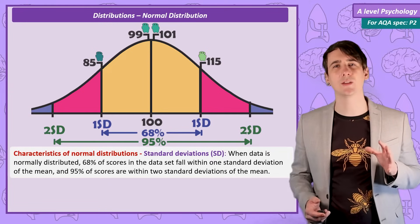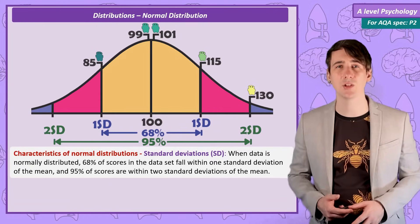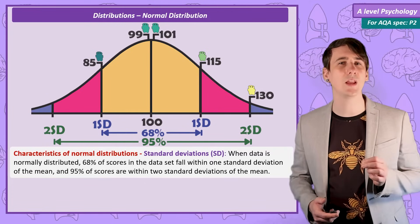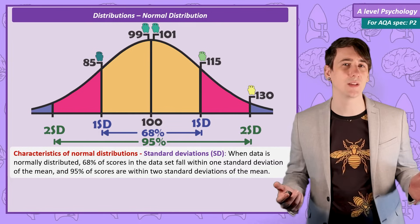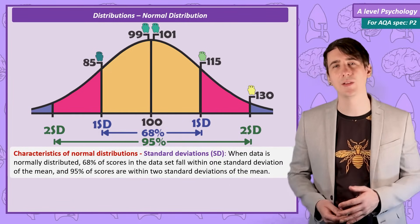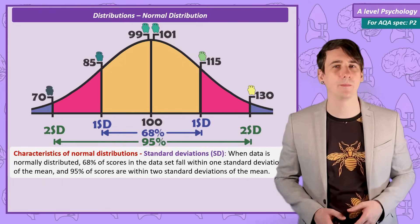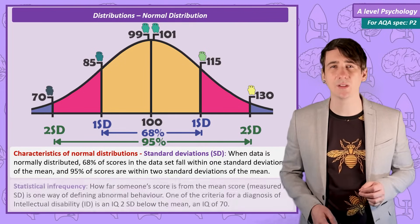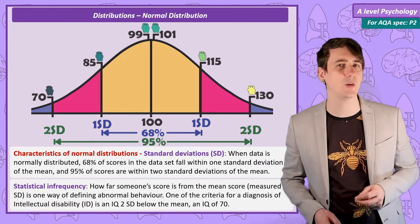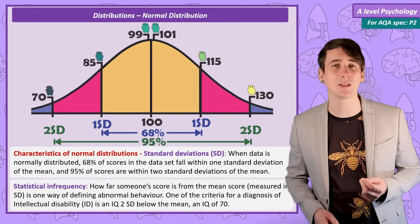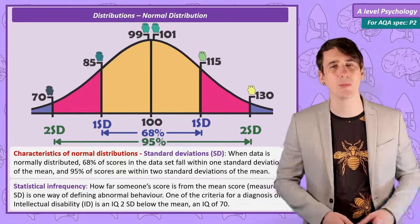Imagine someone gained a score of 130 on an IQ test. They are in the top 2.5% of the population, as they are 2 standard deviations from the mean. Only 5% of people are 2 standard deviations from the mean, and half of them are on the lower end of the scale — for example, people with an IQ of 70 are just as rare. This is very important for psychologists, as we may define abnormality as someone who is statistically infrequent, and use statistics as a tool, such as providing support for people who have an IQ two standard deviations below the mean.